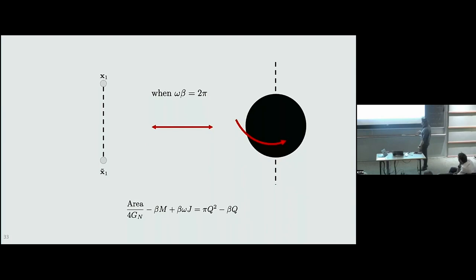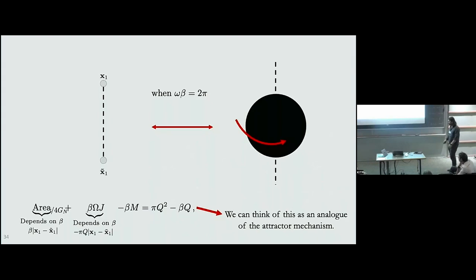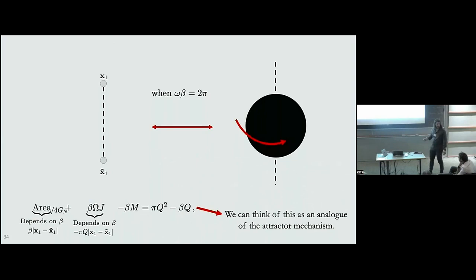I can compute the Euclidean action: it takes the form of area minus βM plus β·Ω·J, and I get the same result as before — it takes exactly the form of an index. The area is given by β times the distance between center and anti-center; β·Ω is 2π. Notably, both the area and J explicitly depend on the distance between the poles, and the distance itself explicitly depended on β. It's only the overall free energy — the Gibbs free energy — that takes the form of an index.